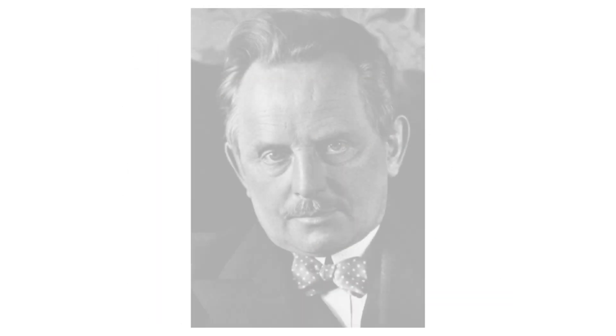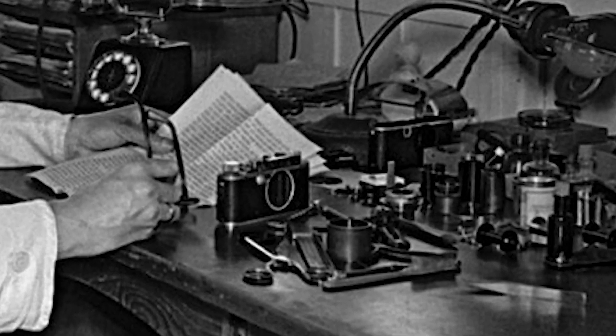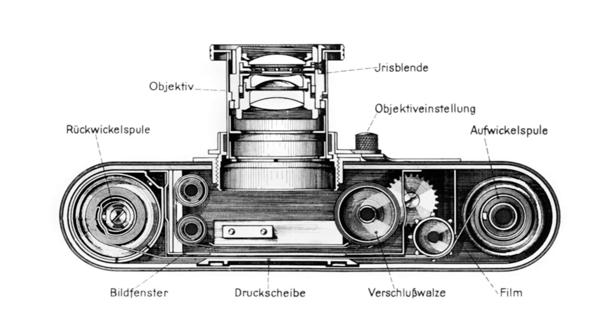Such as a German photographer by the name of Oskar Barnack, who worked for the Leitz company. He was asthmatic and struggled to carry large, heavy cameras. So in around 1913, he began to work on the idea of creating a more compact camera by using 35mm cine film instead. His designs gained a major breakthrough when he developed a way of allowing the film to pass horizontally behind the lens rather than vertically.